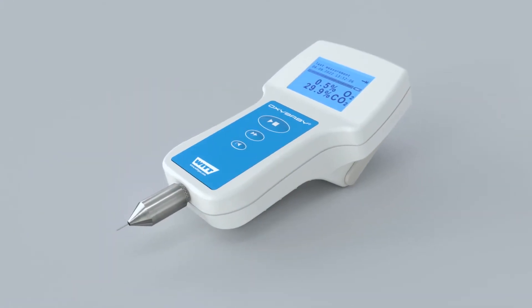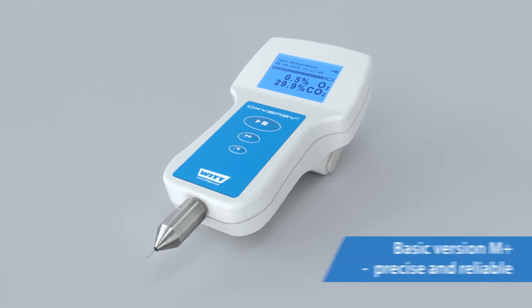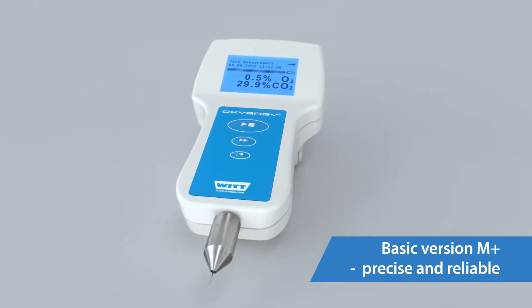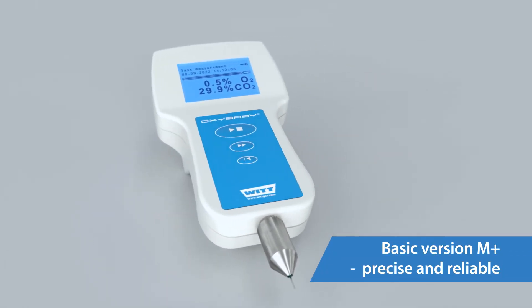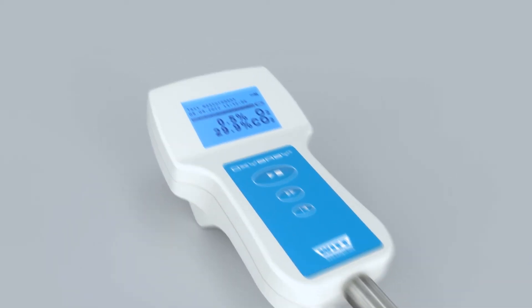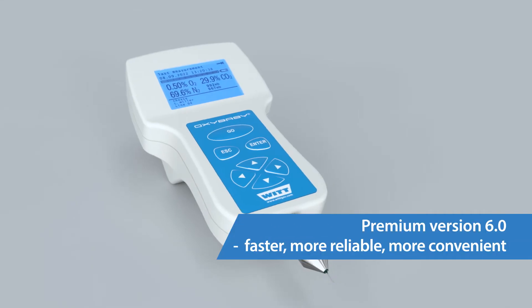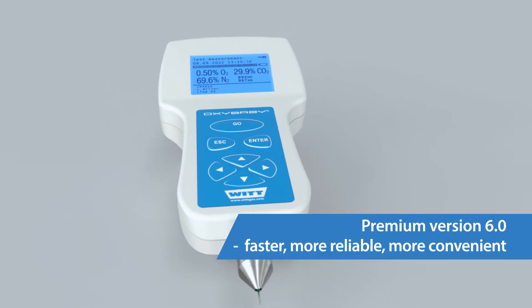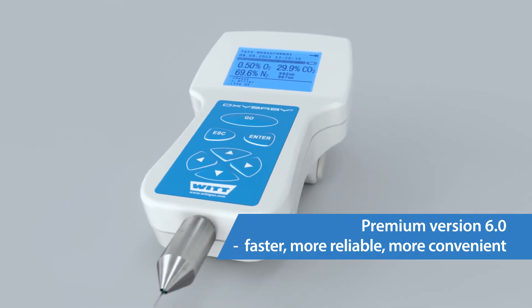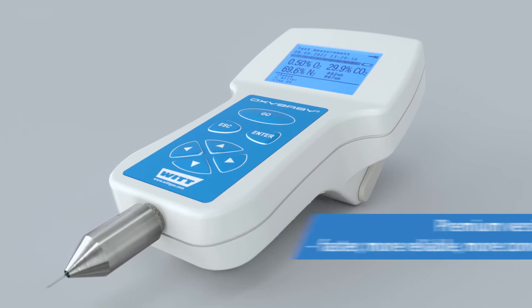Two equipment versions are available. The basic M plus version allows you to take precise and reliable samples. The premium version 6.0 offers additional features that make your quality control even faster, more reliable and more convenient.